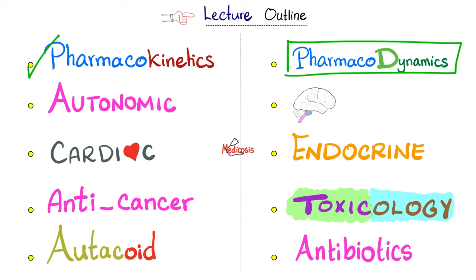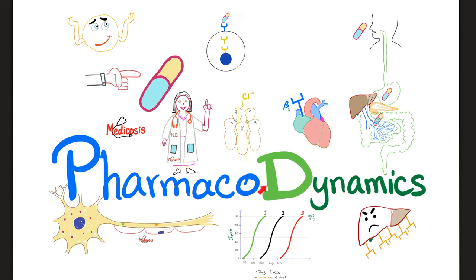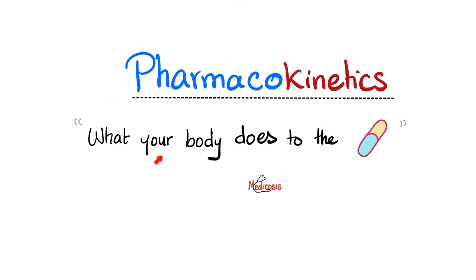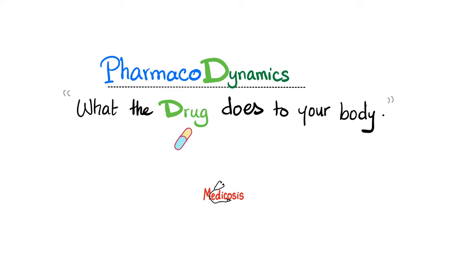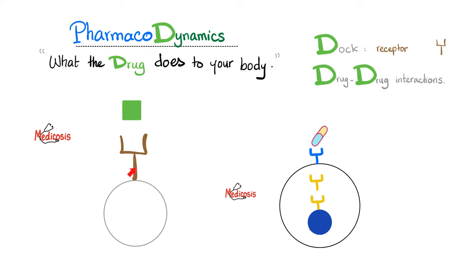Let's have an introduction to pharmacodynamics — what the drug does to your body. Pharmacokinetics is what your body does to the drug: ADME. Pharmacodynamics is what the drug does to your body. This is the drug and this is the receptor. If the drug is water soluble, it cannot pass through the membrane, so the receptor will be on the outside. But if the drug is lipid soluble, the receptor will be on the inside — cytoplasmic or nuclear. The drug binds to the receptor like a key in a lock, like a truck in a dock. Pharmacodynamics studies drugs, receptors, and drug-drug interactions.